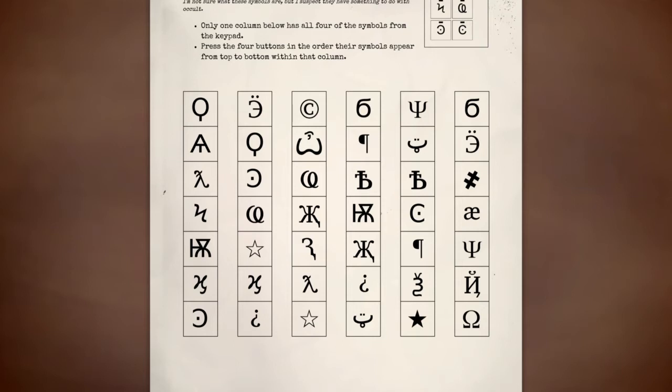Got it. And then to the left of that is the AE symbol. All right, so press in this order: the weird six, the unfinished hashtag, the AE, and then the backwards N. Okay.